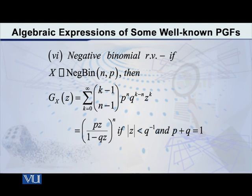For the negative binomial distribution, my dear students, the PGF is given by PZ over 1 minus QZ whole raised to N. And this is also the condition that the modulus of Z has to be less than 1 over Q. And of course, it is understood that we are saying P and Q, P plus Q is equal to 1.